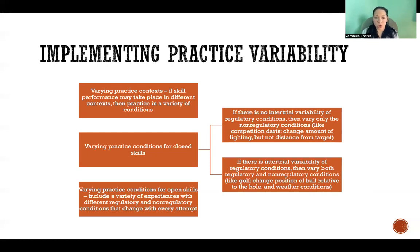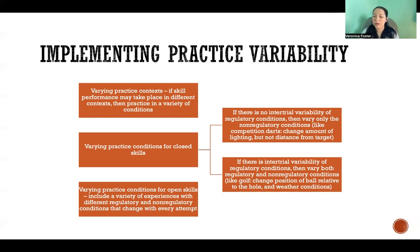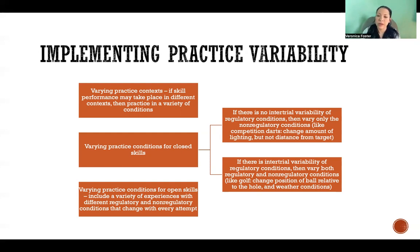We also want to vary the practice conditions. For closed skills with no intertrial variability of regulatory conditions — meaning the conditions that specifically affect your ability to complete the skill don't vary from one trial to the next — a good example is competition darts. The dartboard is the same size, shape, and color; you stand the same distance away; and the darts are the same weight. All of those regulatory conditions are unchanging from one attempt to the next.